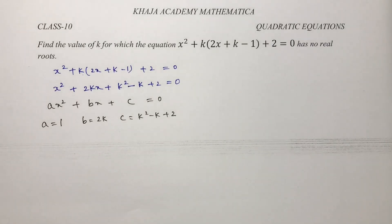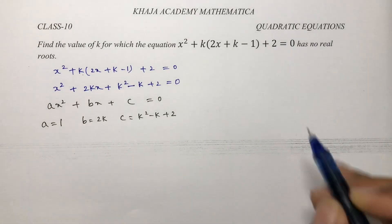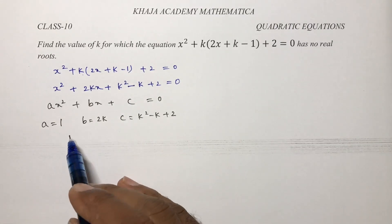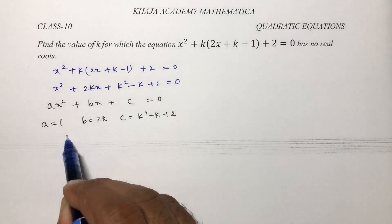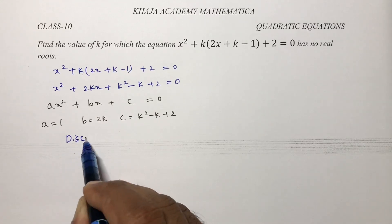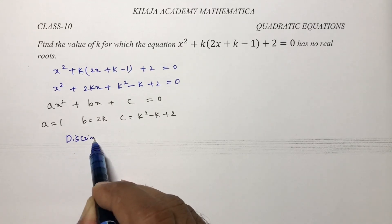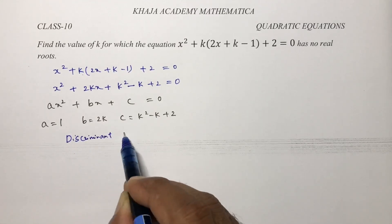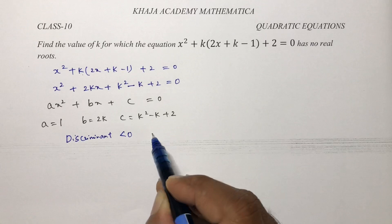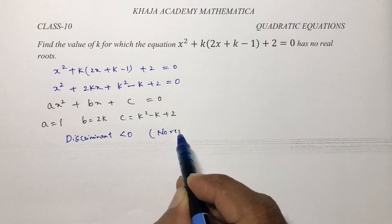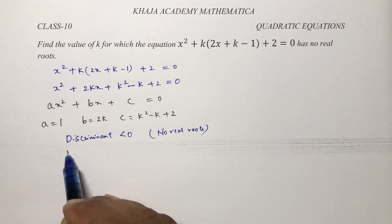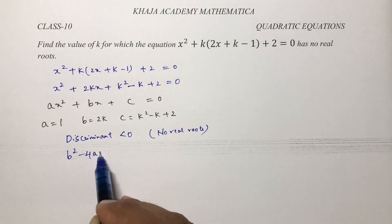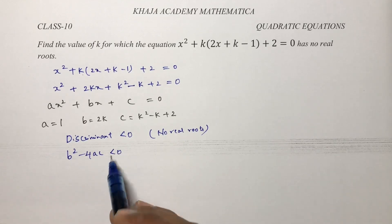They told the equation has no real roots. No real roots means the discriminant is less than 0. So b squared minus 4ac is less than 0.